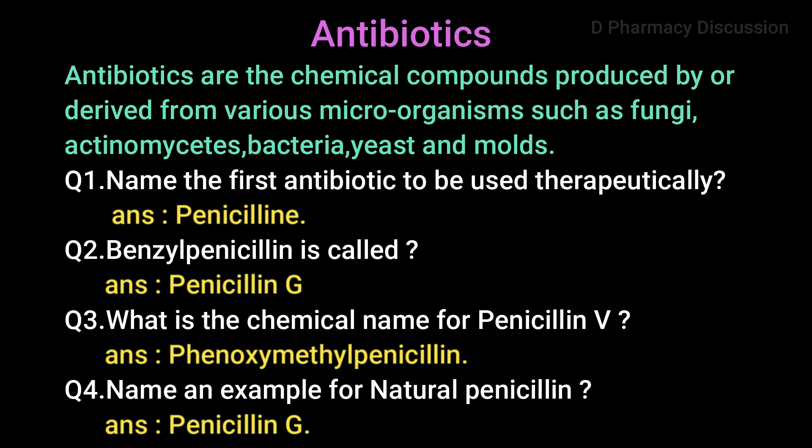Question 1: Name the first antibiotic to be used therapeutically. Answer: penicillin. Question 2: Benzyl penicillin is called penicillin G. Question 3: What is the chemical name for penicillin V? Answer: phenoxymethyl penicillin. Question 4: Name an example for natural penicillin. Answer: penicillin G.